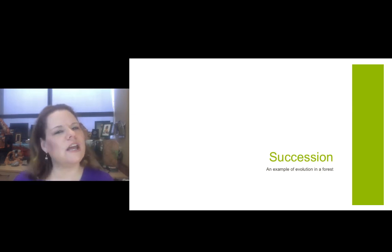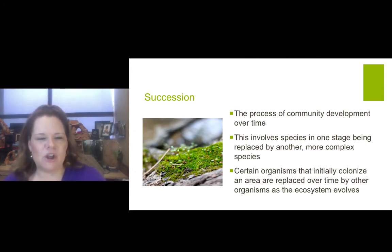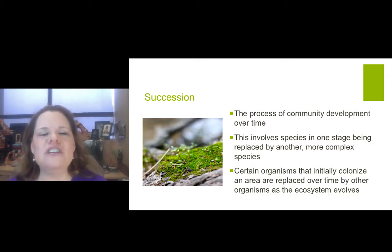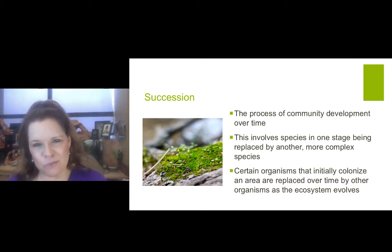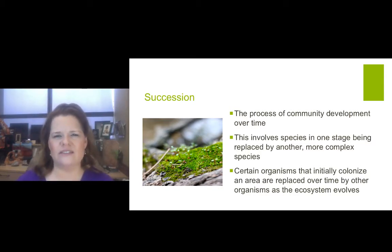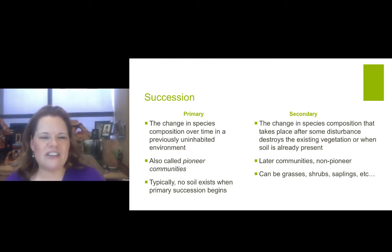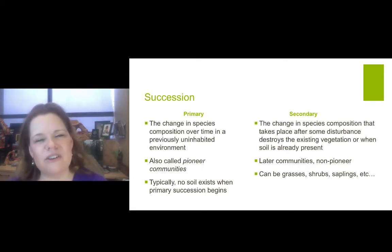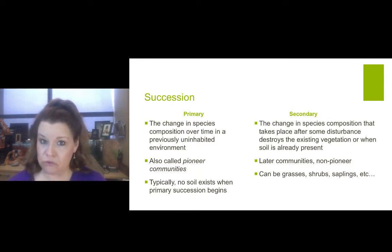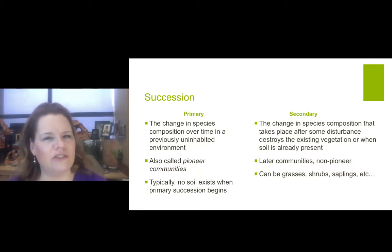Succession — an example of evolution in a forest. The process of a community development over time is what succession really is. This involves species in one stage being replaced by another more complex species. Certain organisms that initially colonize an area are replaced over time by other organisms as the ecosystem evolves. We see succession in two ways — primary and secondary. Primary succession is the change in species composition over time in a previously uninhabited environment. These early communities are also known as pioneer communities. Typically no soil exists when primary succession begins, but will develop over time.